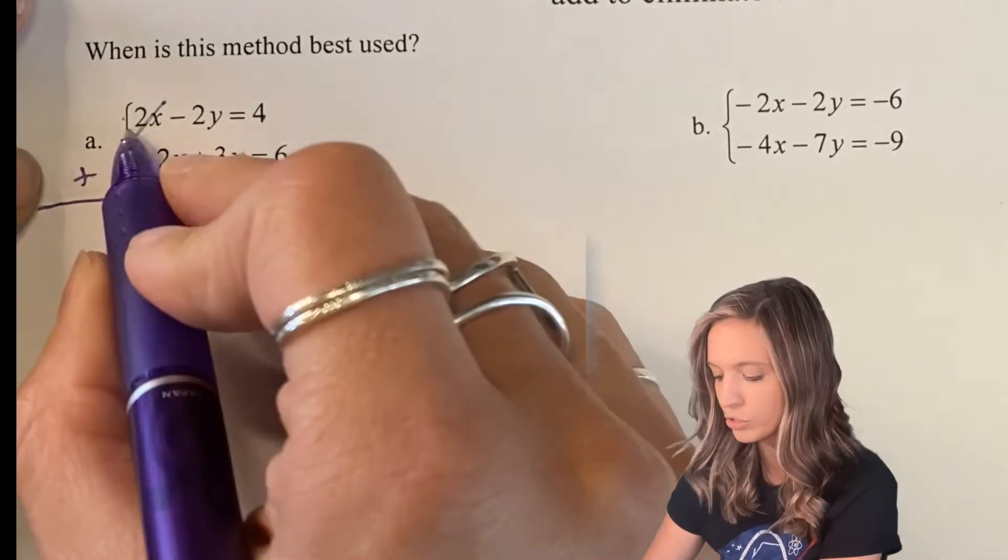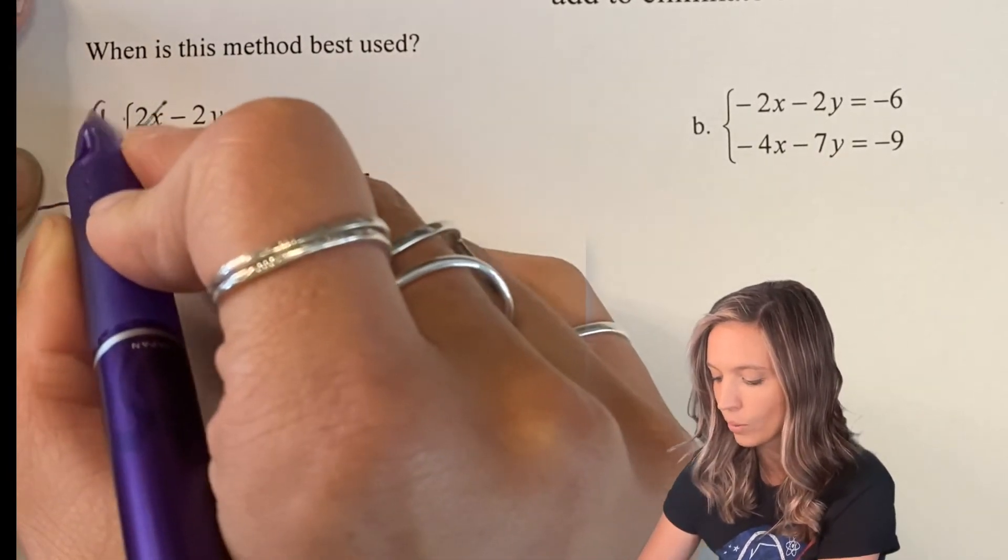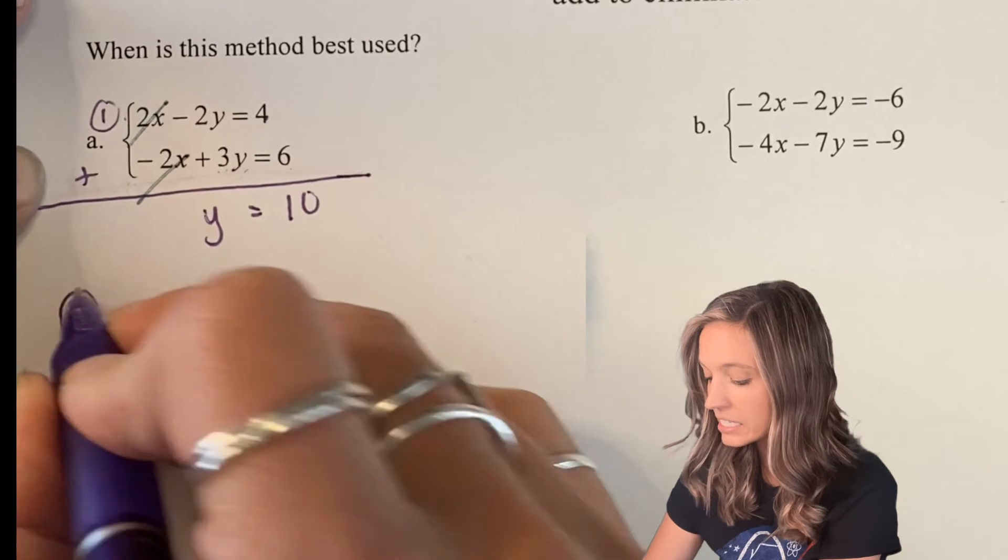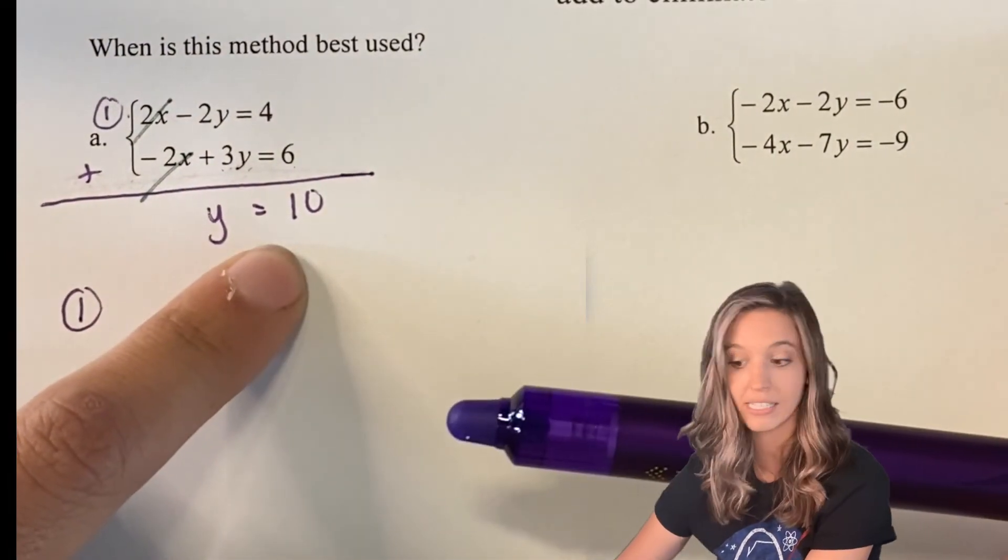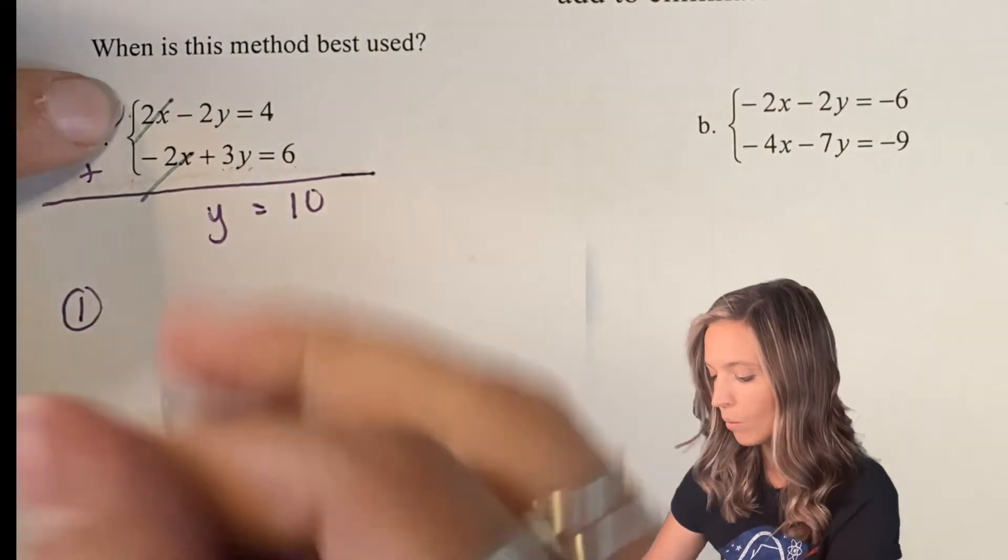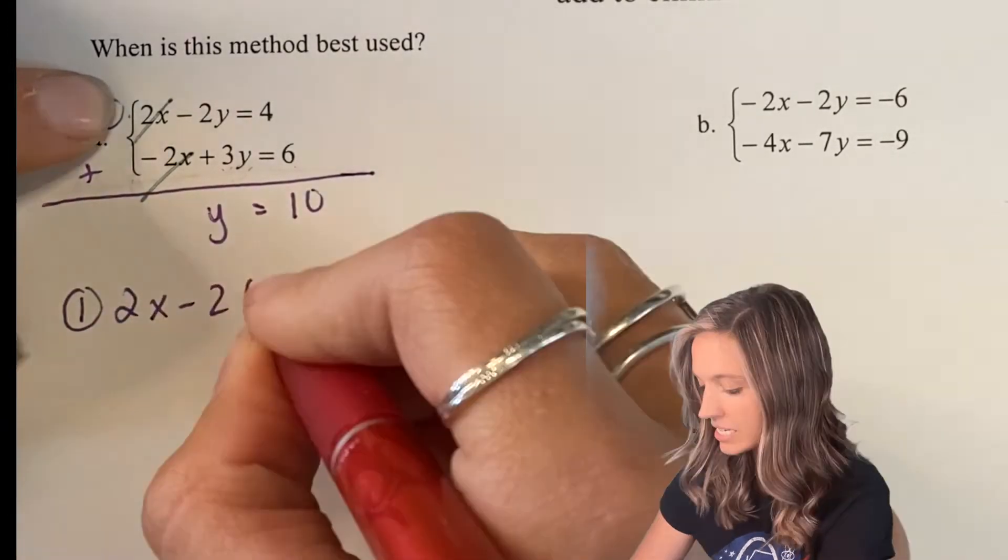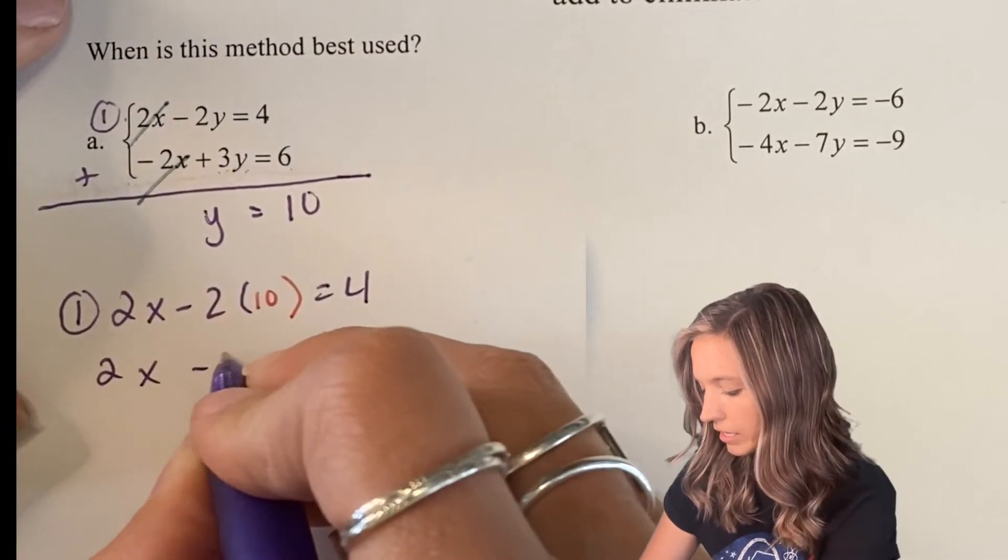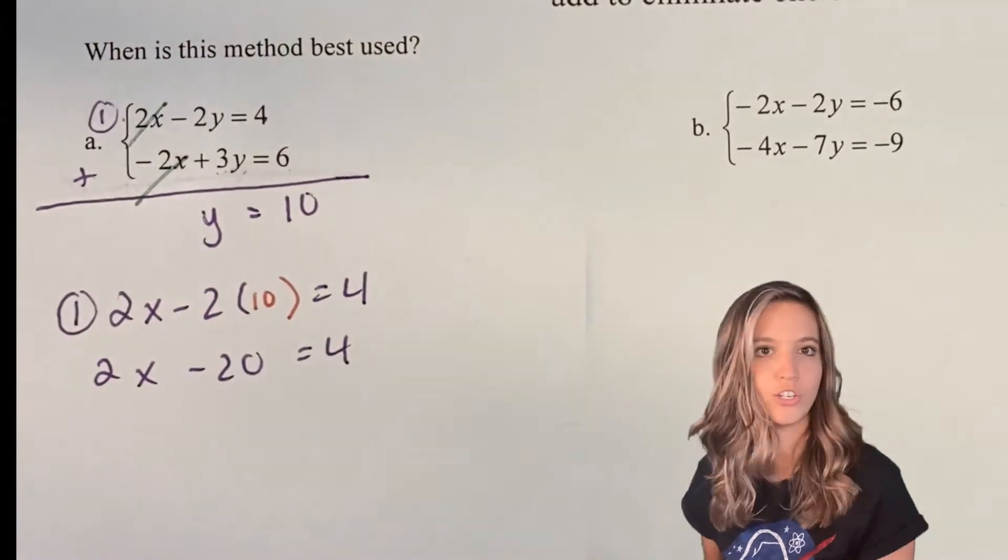Now that I have one of my solutions, I can pick either equation to plug it back into to find x. So I think I'm just going to keep it simple and pick equation 1. So if I substitute, after I eliminate, I then substitute. If I substitute my y back into this original equation, so then I have 2x - 20 = 4 and I can just solve for x.